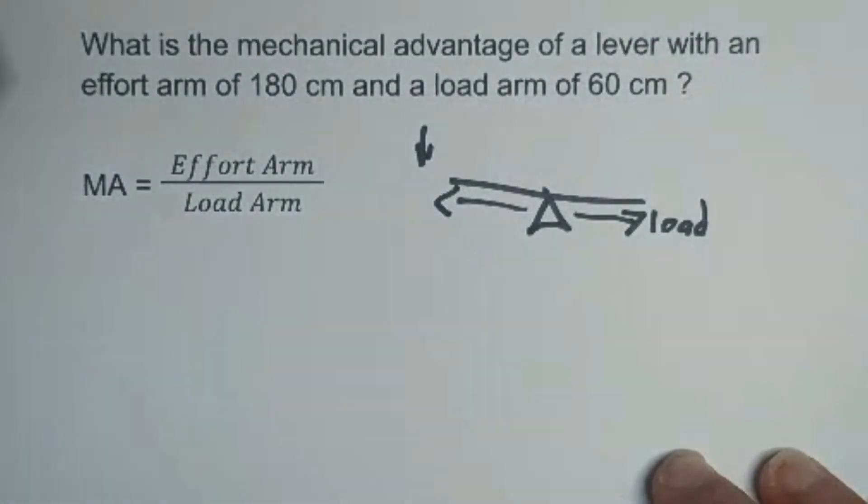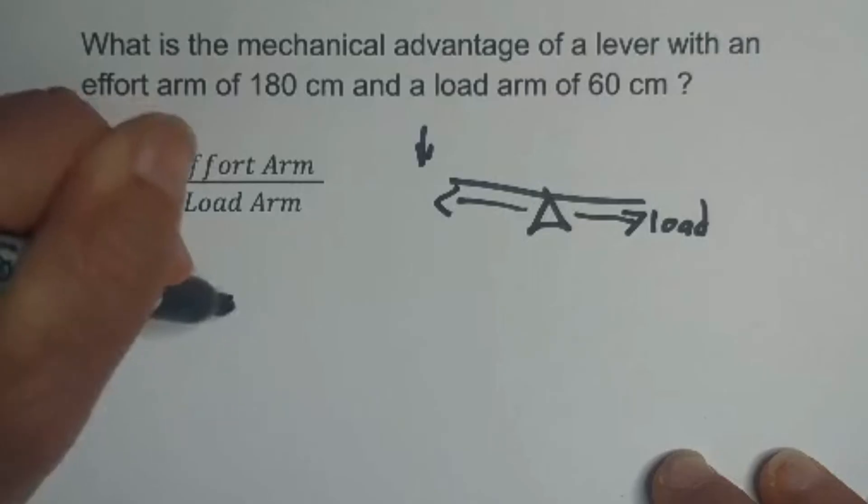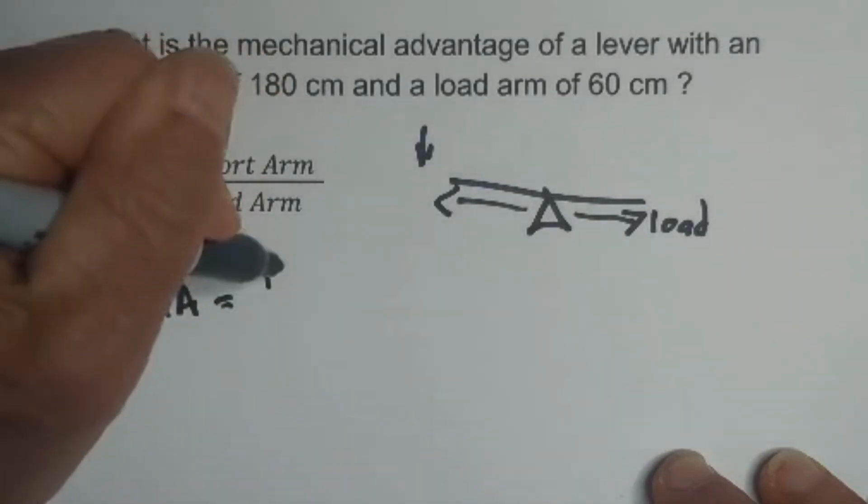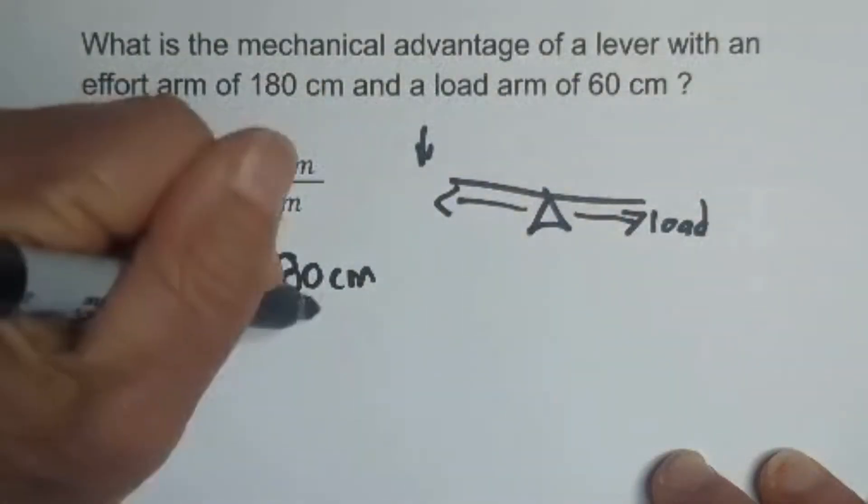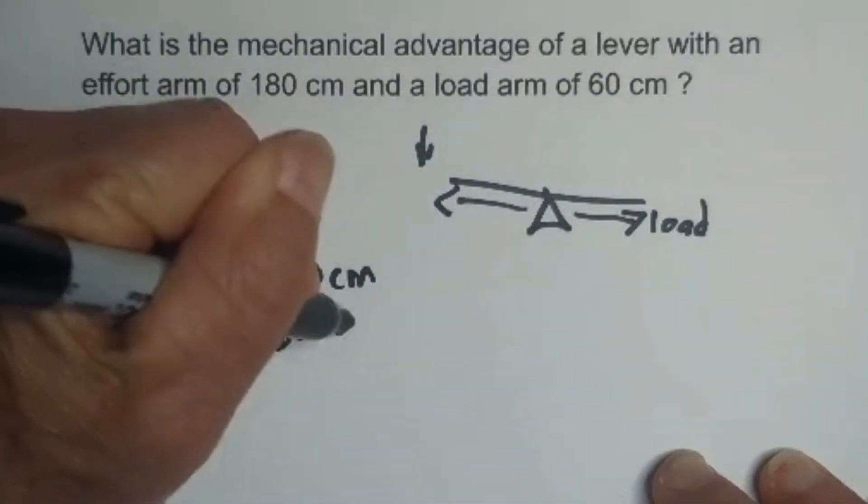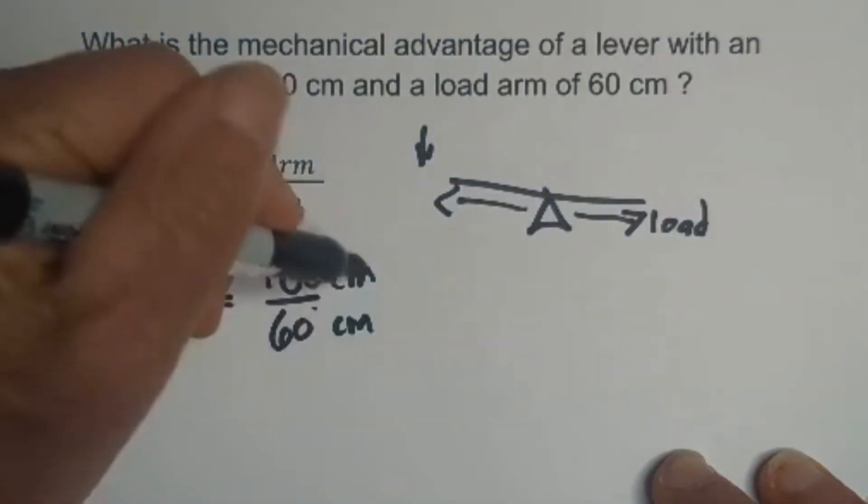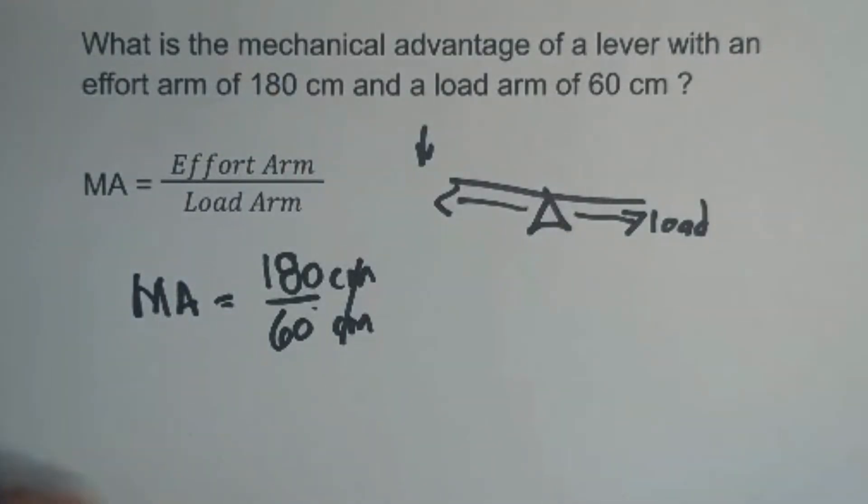So in this, let's just see what we have. We have a mechanical advantage equals the effort arm is 180 centimeters and the load arm is 60 centimeters. Centimeters will cancel and 180 divided by 60